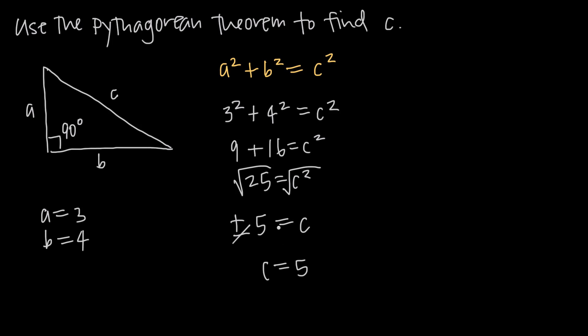That's always going to be true. Whenever you use the Pythagorean theorem to find the length of one side, you can always ignore the negative value that you get when you take the square root and just use the positive value. So with a equals 3 and b equals 4, we know that c is equal to 5.